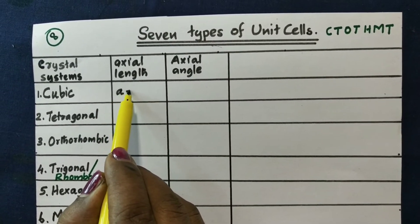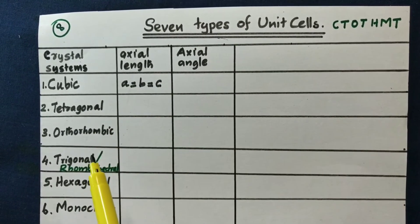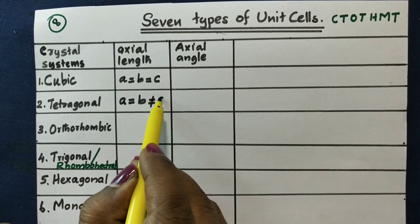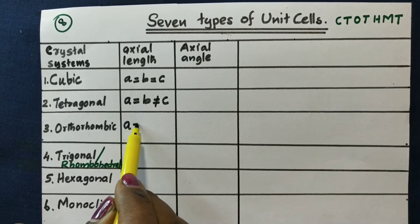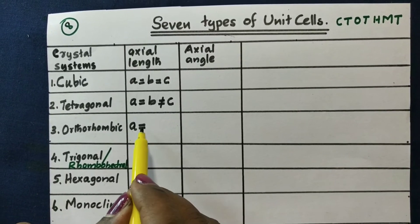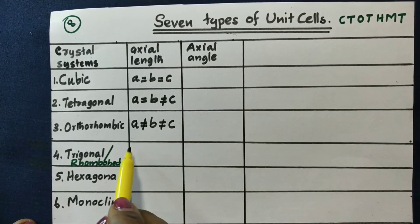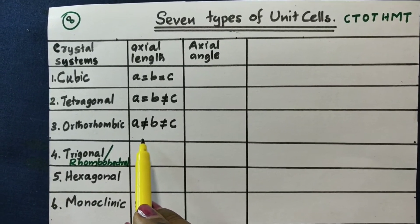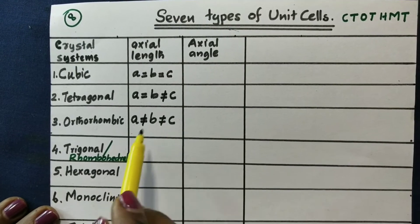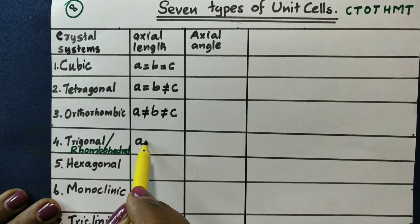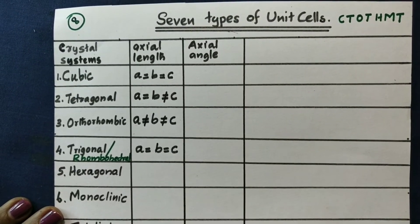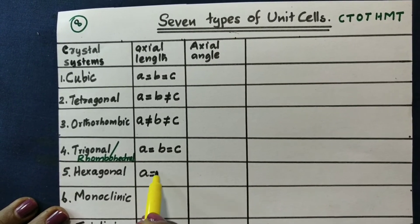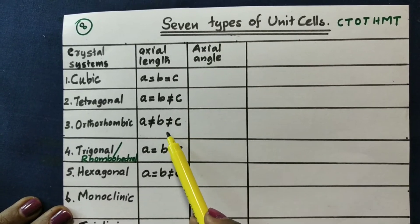For cubic: A equal to B equal to C. For tetragonal: A equal to B, not equal to C. For orthorhombic: A not equal to B not equal to C. For trigonal: A equal to B equal to C. For hexagonal: A equal to B, not equal to C.